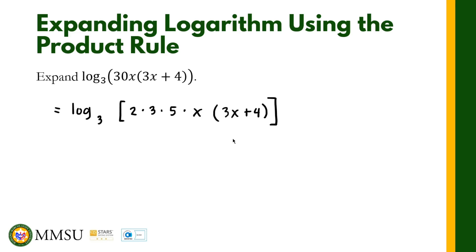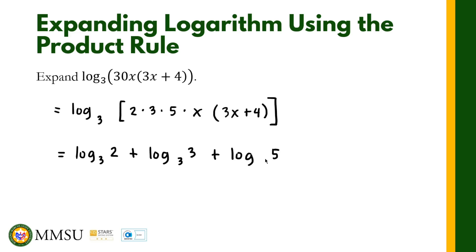Now we can use the product rule for logarithms by taking the sum of the logarithm of each individual factor with base 3. This gives us: log base 3 of 2, plus log base 3 of 3, plus log base 3 of 5, plus log base 3 of x, plus log base 3 of (3x + 4).